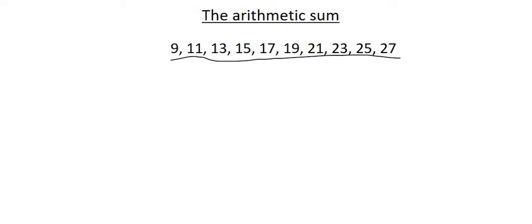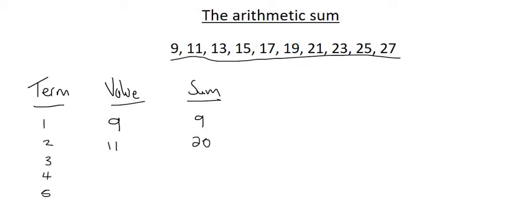So let's make a little column over here. Term 1 has a value of 9 and the sum is 9. That's not going to make sense just yet, but it will now. Term 2 has a value of 11, but the sum is 20. Why? Because 9 plus 11 is 20. Term 3 is 13, but the sum would be 33 because if you add the first three terms together you get 33.